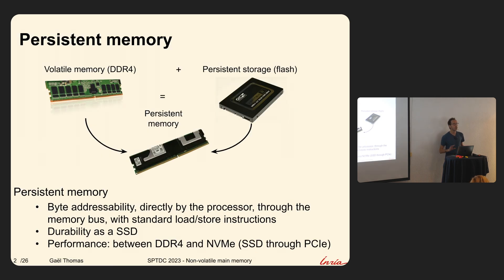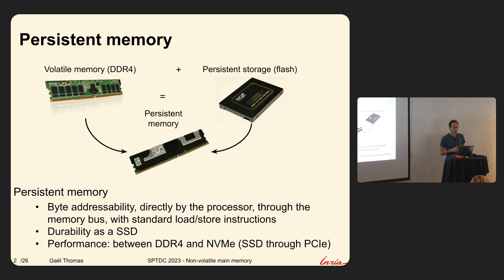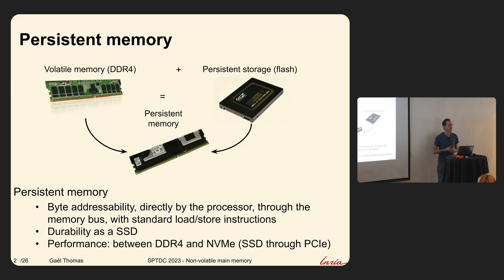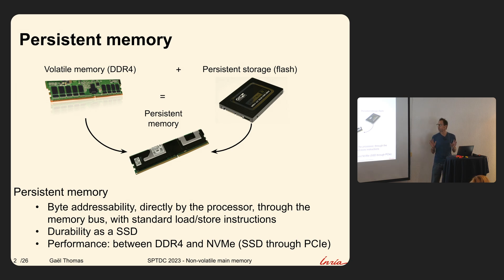A persistent memory is a happy wedding between a volatile memory, which is a classical memory, and a persistent storage. It means you have the properties of memory — byte addressability — so from the processor, with simple loads and stores, you can access the persistent memory. The main difference with volatile memory is that when you shut down your computer, your data is still there. So it has the durability of a hard drive, with almost the performance of a volatile memory.